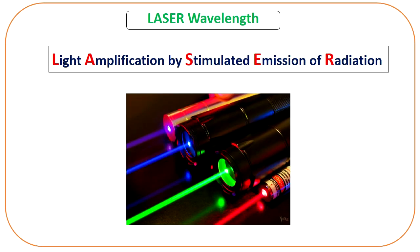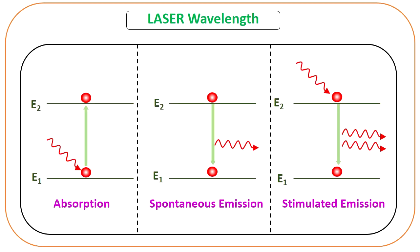Now let us see some theory behind the laser. What is a laser? The full form of laser is Light Amplification by Stimulated Emission of Radiation. In order to have stimulated emission, we will explain the difference between spontaneous emission and stimulated emission using these two diagrams. Stimulated emission plays a major role in laser action. First, let us understand what is spontaneous emission.